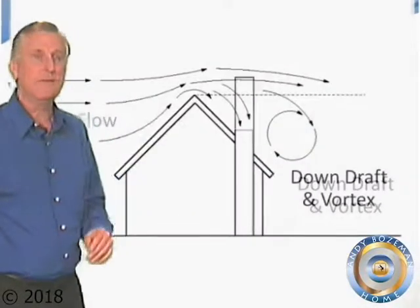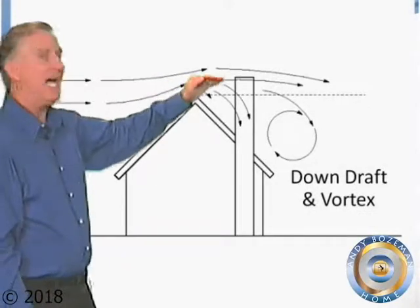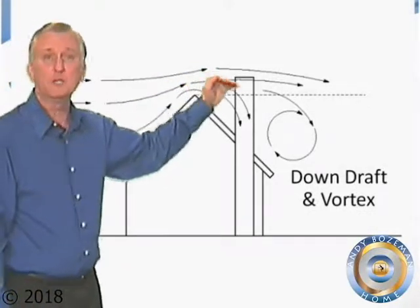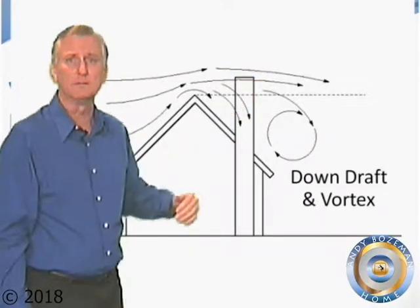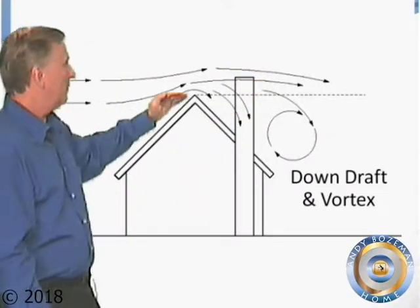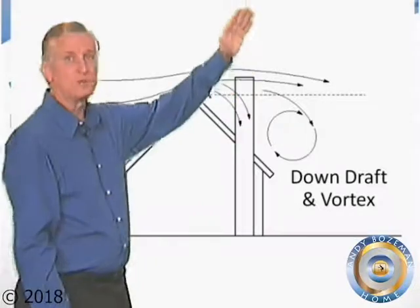To fix this, you have to make the chimney tall enough to get out of the turbulence. That's why you hear people talking about chimney heights and how critical they are. They have to be up above the line of turbulence to draw properly.